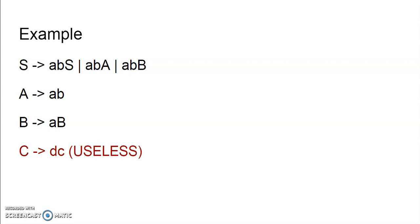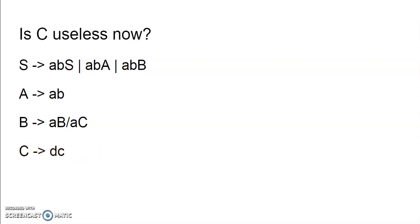C produces DC is useless. Why? Because C is never used in any of the previous productions. S is our start variable. S is using S, A, and B productions. So C is not used by any variable — S is not using C, neither A nor B is using C. So C is useless. Pause the video and note down the answer.